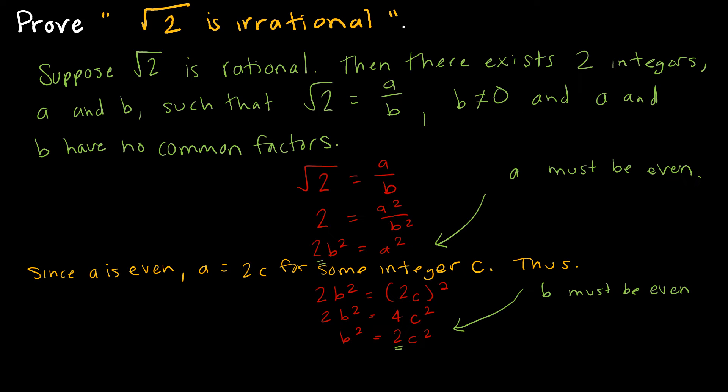Now, why is this a proof by contradiction? At the beginning of this, I said A and B have no common factors. But we know that if A is even and B is even, therefore, they do have a common factor.